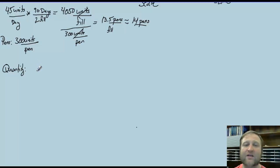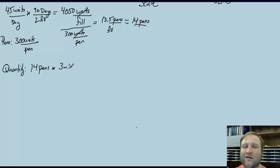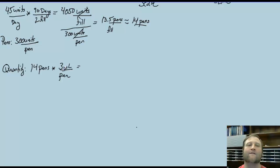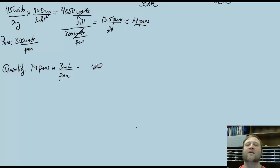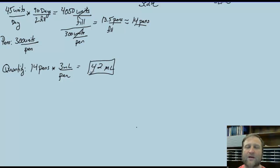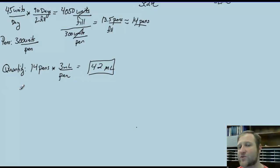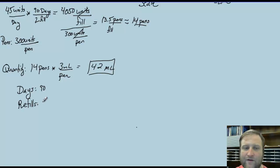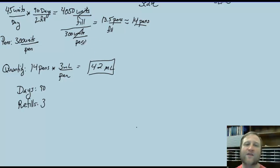The quantity we input in our EMR must be in mLs. There are 3 mLs per pen, so: 14 pens × 3 mLs per pen = 42 mLs. The quantity to input is 42, days will be 90, refills equals 3. That's how we calculate the total quantity needed for this insulin.